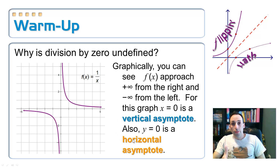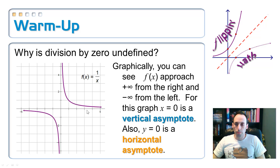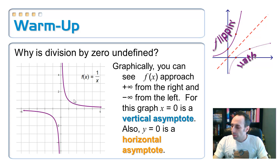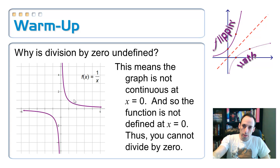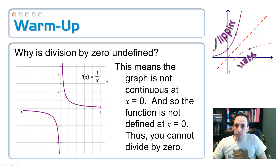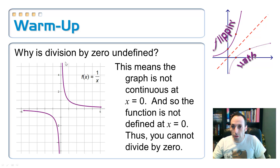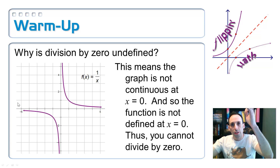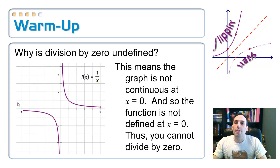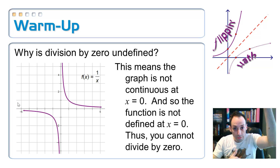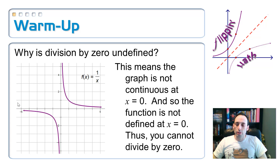We get closer and closer to zero but never actually reach it. We also have a horizontal asymptote — the same kind of thing but horizontal. In this case it's the x-axis, y equals zero. Our rational graphs are going to have these things called asymptotes — a Greek word meaning something like 'fall together.' Right here at zero, the graph is not continuous. Continuous means I wouldn't have to lift my pencil off the page to draw the whole graph, but here I'd have to lift it. It's approaching positive infinity and negative infinity — that's why we can't divide by zero.